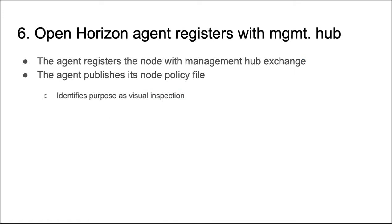Sixth, once the software is installed and configured, the Open Horizon agent contacts the Open Horizon management hub services and registers itself by presenting authorization credentials. It then publishes its node policy file.